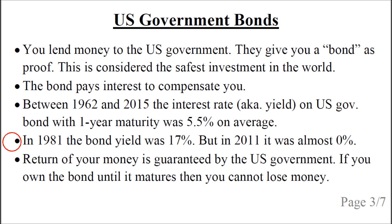But the bond yield changes a lot over the years. In 1981, the bond yield was 17%, but in 2011, it was almost zero. Return of your money is guaranteed by the US government, so if you own the bond until it matures, then you cannot lose your money.